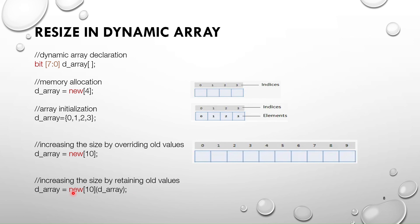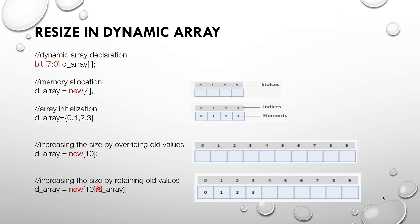If I want to increase the size while retaining the old values, the syntax is: `d_array = new[10](d_array)` — after the new size, inside parentheses we write the existing array name. This retains the old values and increases the size. The total size becomes 10, and the old values 0, 1, 2, 3 are preserved. This is how we can resize a dynamic array. In the next session we will discuss associative arrays, and all of this will also be covered in coding examples in upcoming videos.